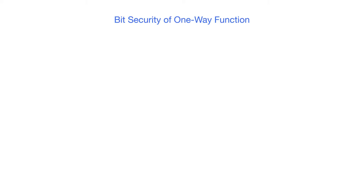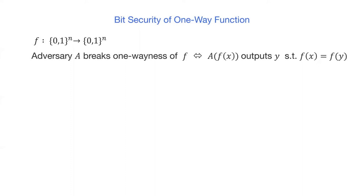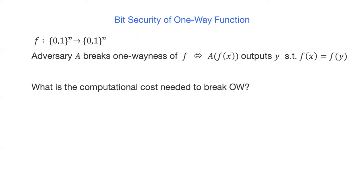As an example, let's consider the case of a one-way function. Let f be a function. We say an adversary A breaks the one-wayness of f if, given a sample f(x), A outputs a string y satisfying f(x) = f(y). We want to consider the computational cost needed to break one-wayness.